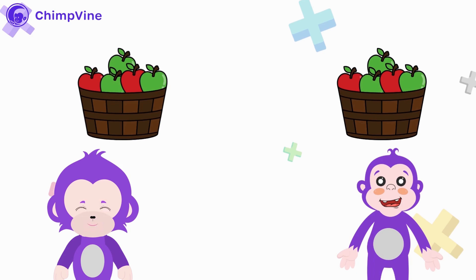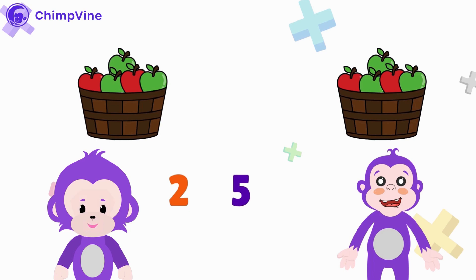First we take the number of people — you and your friend — which is two. Then we take the number of apples each of them has, which is five. Now put the times sign in between these two. We get two times five, which is equal to ten. So the total number of apples we will have is ten.